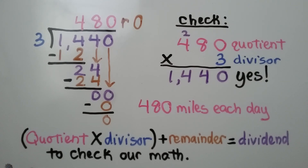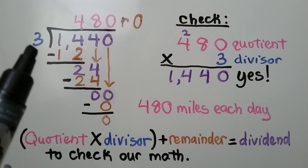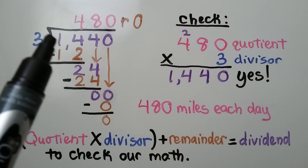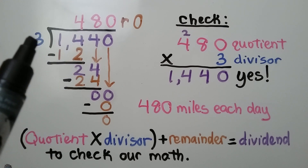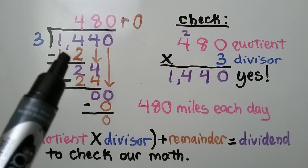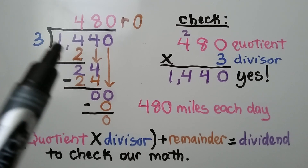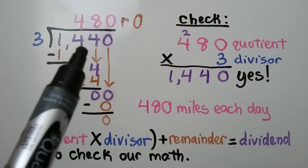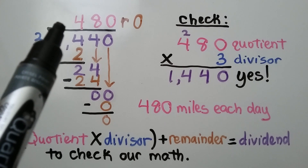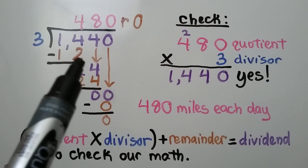I'm going to go through this quickly, then again more slowly. We have 1,440 divided by 3. Can 3 fit into 1? No. So we include the 4 in the hundreds place and ask: can 3 fit into 14? Yes. 3 times 4 is 12, so we put a 4 in the hundreds place of the quotient. 3 times 4 is 12. We subtract and get 2.